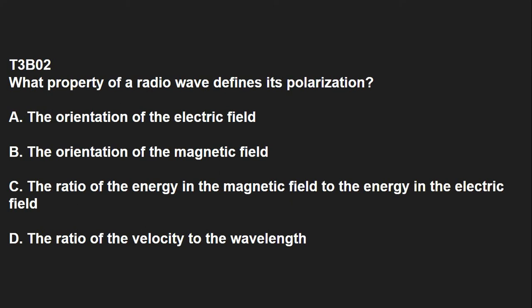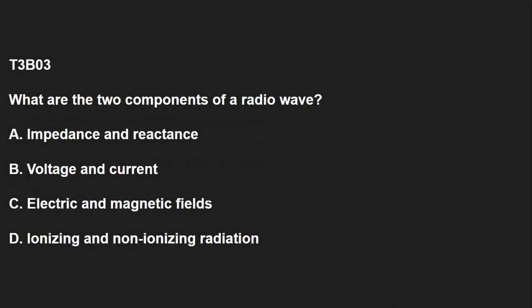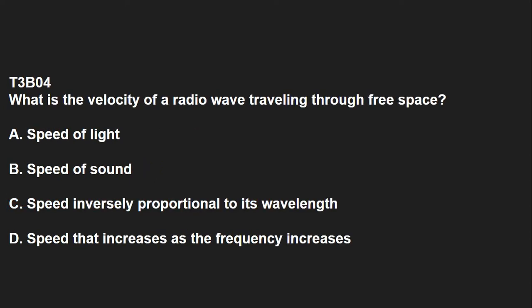T3B02: What property of a radio wave defines its polarization? The orientation of the electric field. T3B03: What are two components of a radio wave? That would be the electric and magnetic fields. T3B04: What is the velocity of a radio wave traveling through free space? That answer is the speed of light.